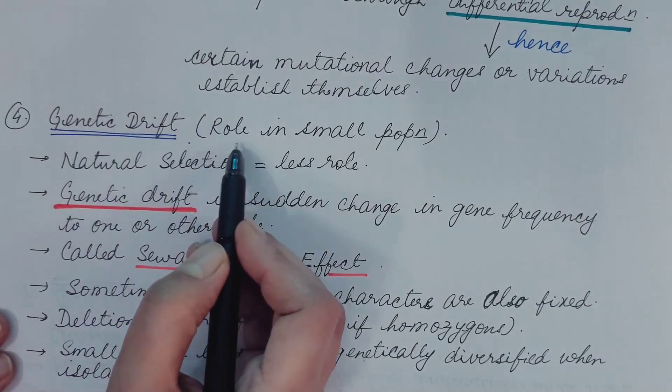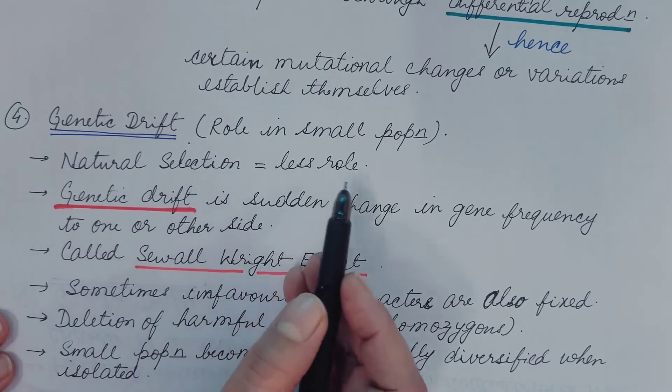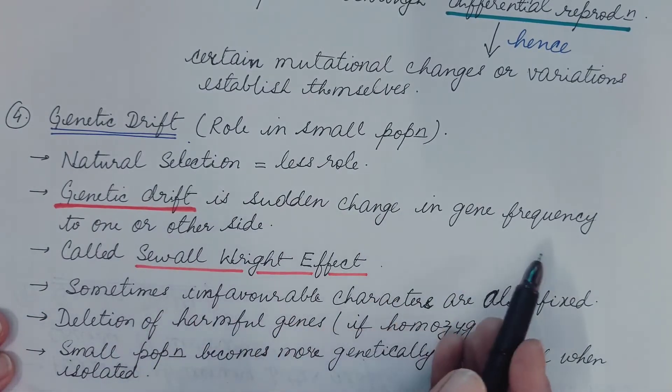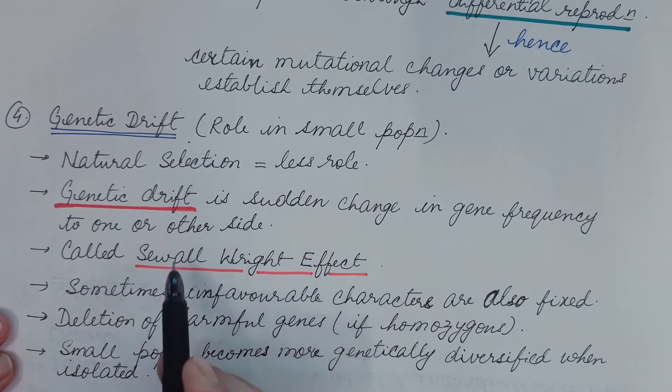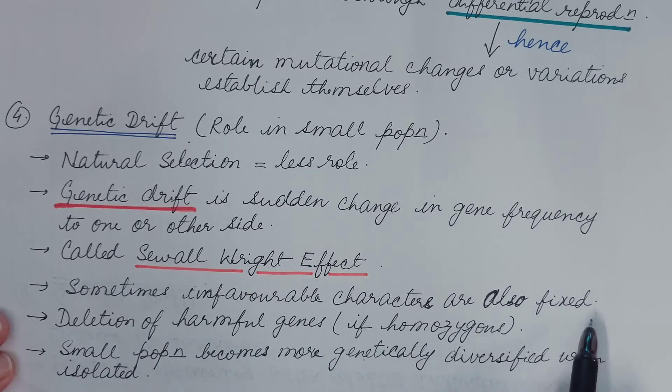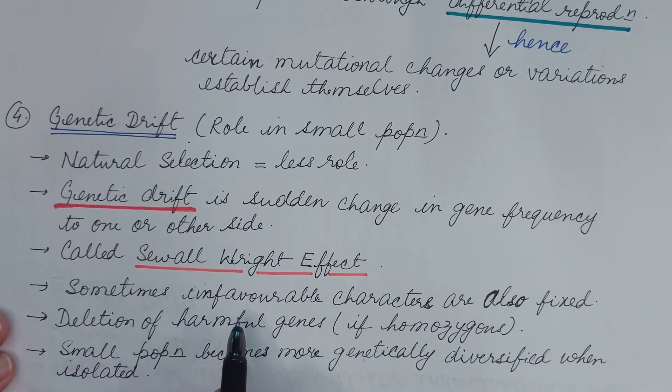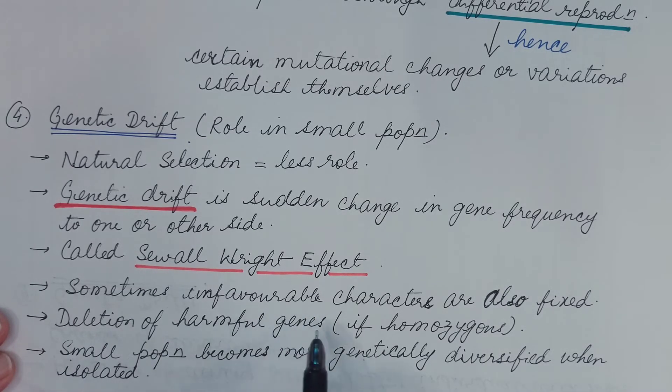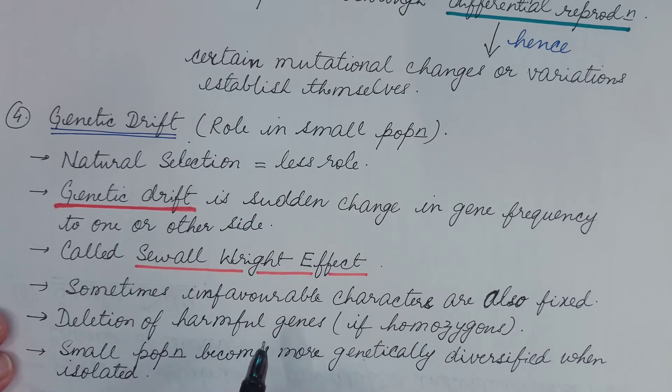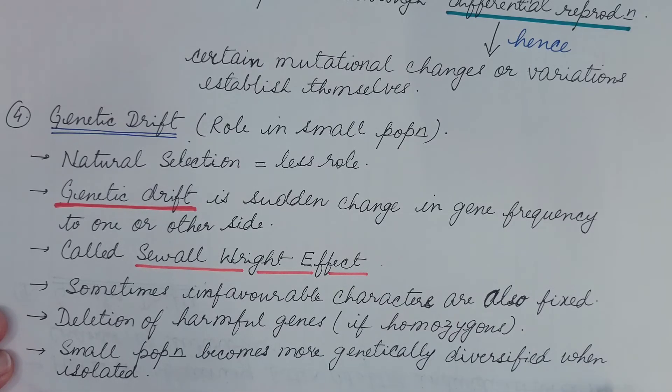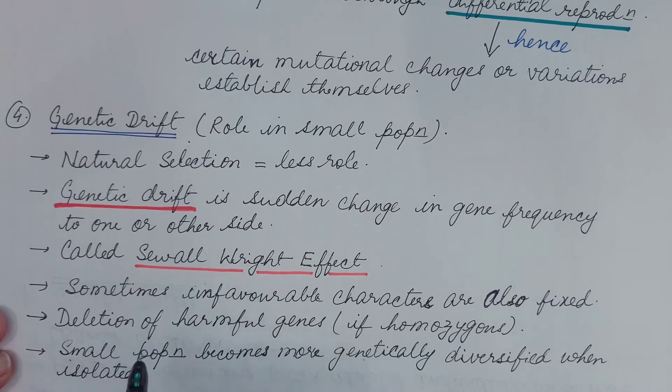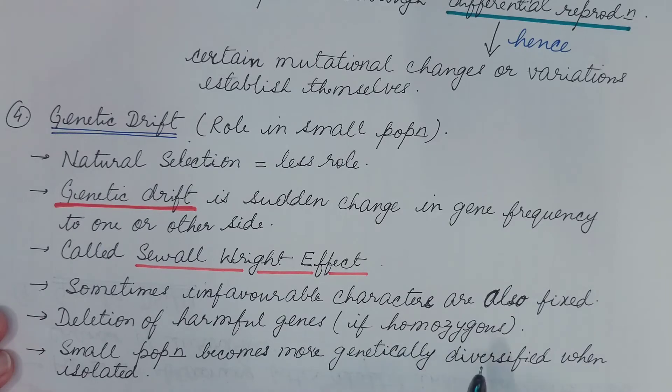Now fourth is genetic drift. It plays an important role in the small population. Natural selection has less role in the small population. What is genetic drift? It is sudden change in gene frequency to one or the other side. It is also called Sewall Wright effect because it was proposed by Sewall Wright. Sometimes unfavorable characters are also fixed because there is sudden change in the gene frequency and population tends to become homozygous. Deletion of the harmful genes or deleterious genes if homozygous. Because if the individual has the deleterious or harmful gene in the homozygous state then it dies and hence there is the deletion of this gene. So when the small population is isolated from the bulk population it becomes more genetically diversified. Because some of the characters are fixed and some are lost and hence these become more genetically diversified.